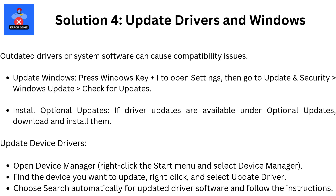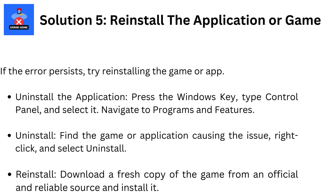Choose Search Automatically for Updated Driver Software and follow the instructions. Solution 5: Reinstall the application or game. If the error persists, try reinstalling the game or app. Press the Windows key, type Control Panel, and select it. Navigate to Programs and Features. Find the game or application causing the issue, right-click, and select Uninstall. Then download a fresh copy of the game from an official and reliable source and install it.